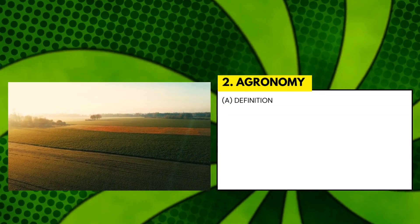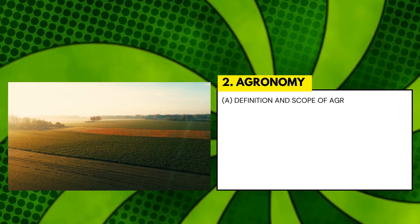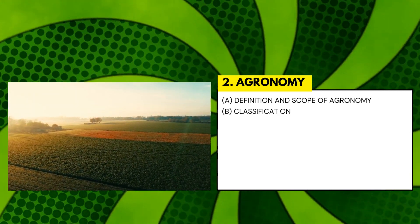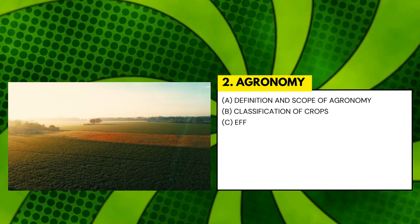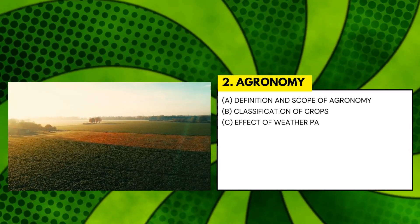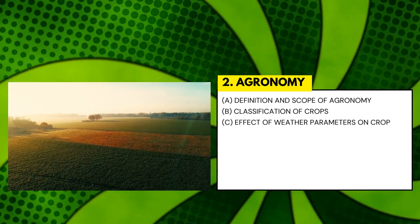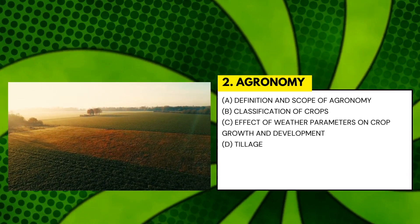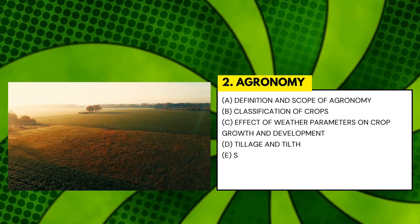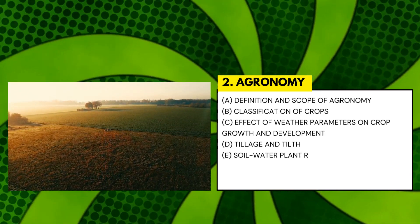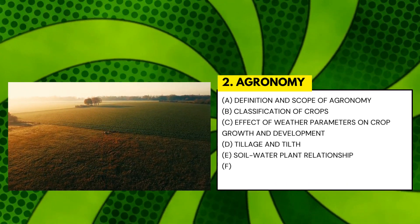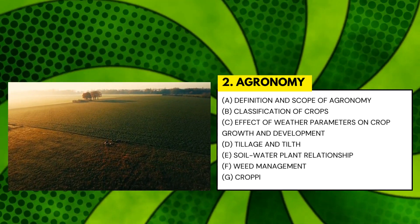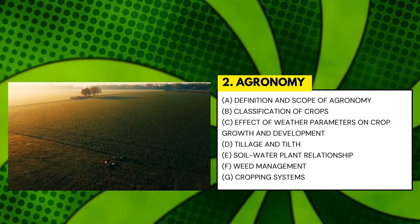Agronomy is a branch of agricultural science that deals with the methods which provide favorable environment to the crop for higher productivity. Learn about different types of crops, basic parameters for crop growth and development, soil-water-plant relationship, weed management, and various types of cropping systems in detail.